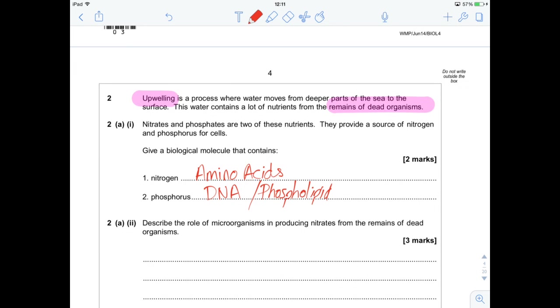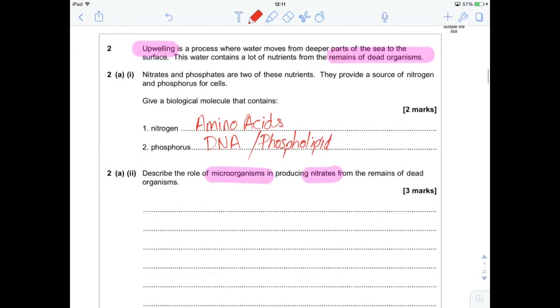Second question, describe the role of microorganisms in producing nitrates from the remains of dead organisms. Nice, easy, this should be your bread and butter nitrogen cycle question. You should be able to reel this off in your sleep. You can do it in two really short bullet points to get all three marks, and I'm going to show you how to do that.